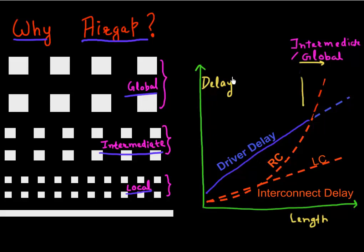And there are different components of delay. So there's a driver delay that is a transistor which is driving it. And then there's the RC delay which is associated with the resistance of this wire and the coupling that it gets with all these other capacitors.